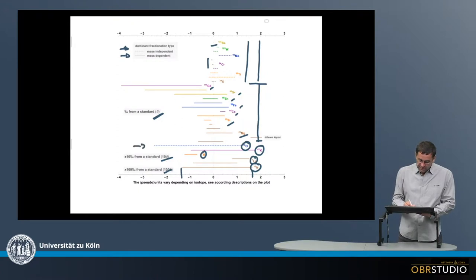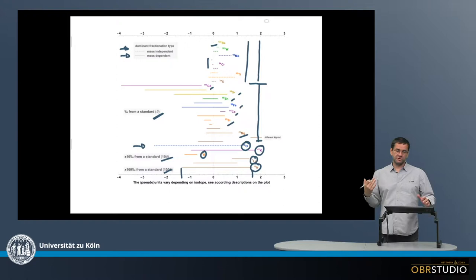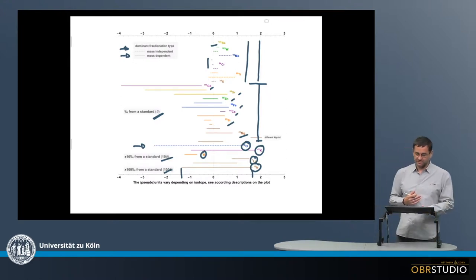And it also needs to be said that oxygen down here is shown as mass independent, because in oxygen, it's a little bit a special case. In oxygen there is the mass dependent fractionation, but there's also a mass independent fractionation here. This is the slope one line in the three oxygen isotope plot.